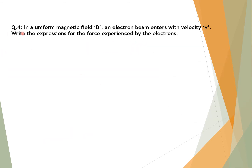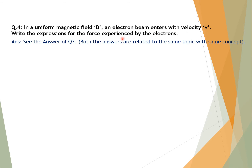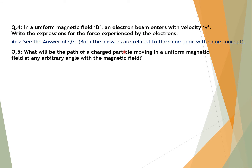Question number four: In a uniform magnetic field B, an electron beam enters with velocity V — write the expression for the force experienced by the electrons. For this question, see the answer of question number three, as both answers are related to the same topic with the same concept. Question number five: What will be the path of a charged particle moving in a uniform magnetic field at any arbitrary angle? The answer can also be seen in question number three.